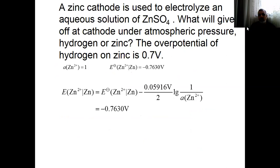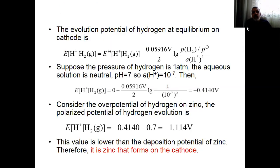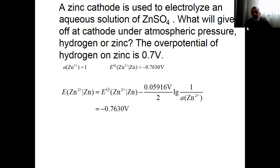Let's look at hydrogen. Hydrogen is more noble than zinc, but something happens — the overpotential of hydrogen on zinc is 0.71 volt. So normally hydrogen is more noble than zinc, but during this reaction something unusual happens: the overpotential concept is to be mentioned here. The hydrogen becomes less noble than zinc due to the overpotential. The evolution potential of hydrogen at equilibrium on the cathode: suppose the pressure of hydrogen is 1 atm, the solution is neutral, the pH is 7, the hydrogen concentration drops to 10⁻⁷, then the normal voltage becomes minus 0.414 volts. Considering the overpotential of hydrogen on zinc, the polarized potential of hydrogen evolution becomes minus 1.1 volts.